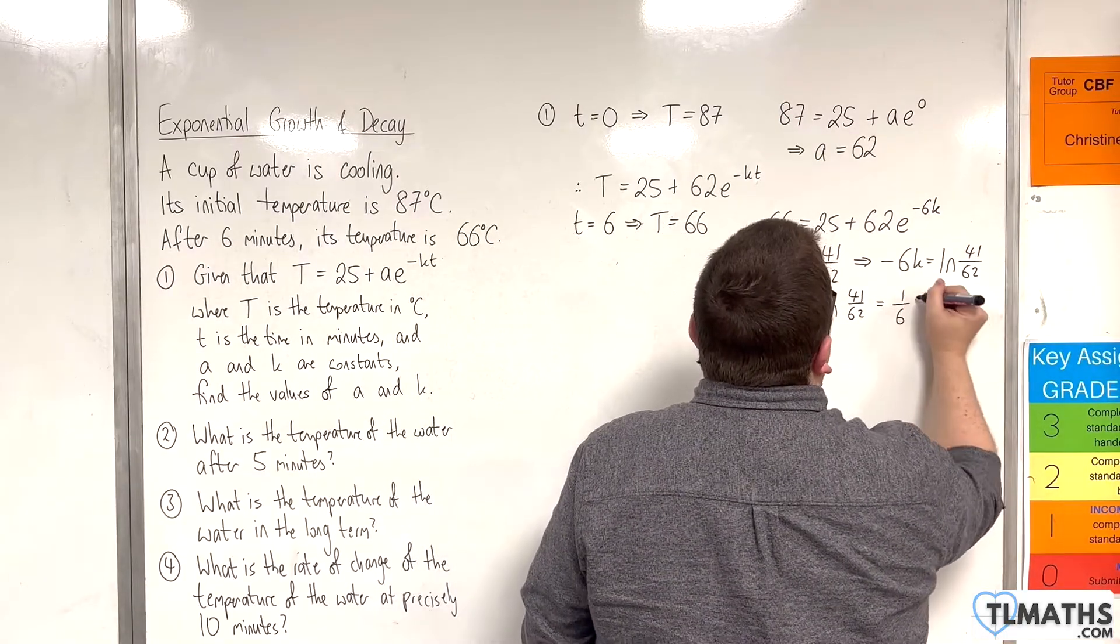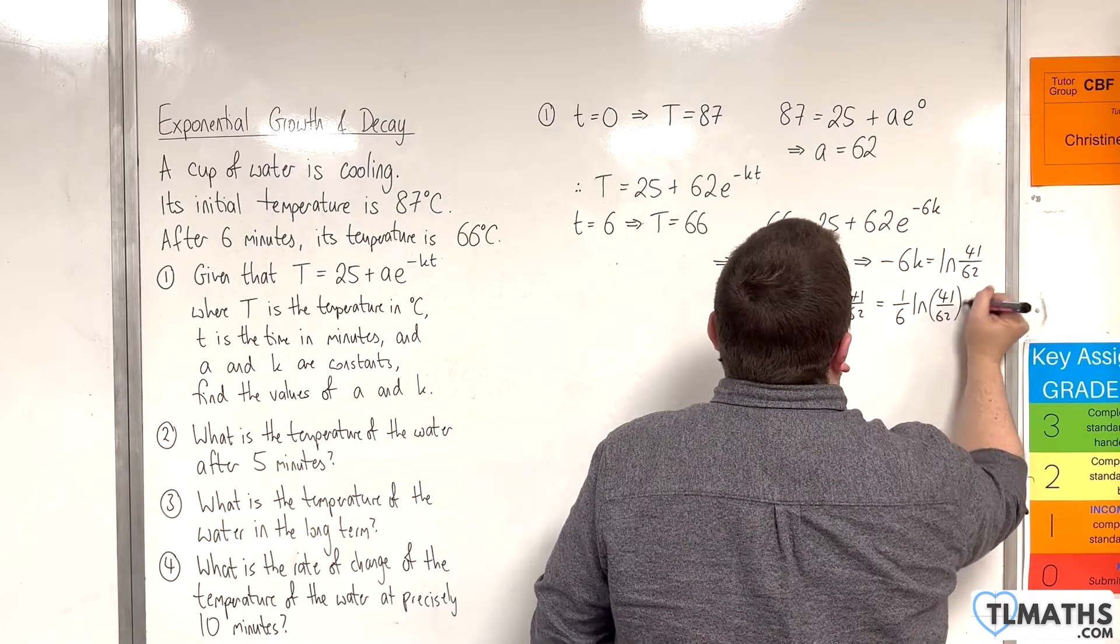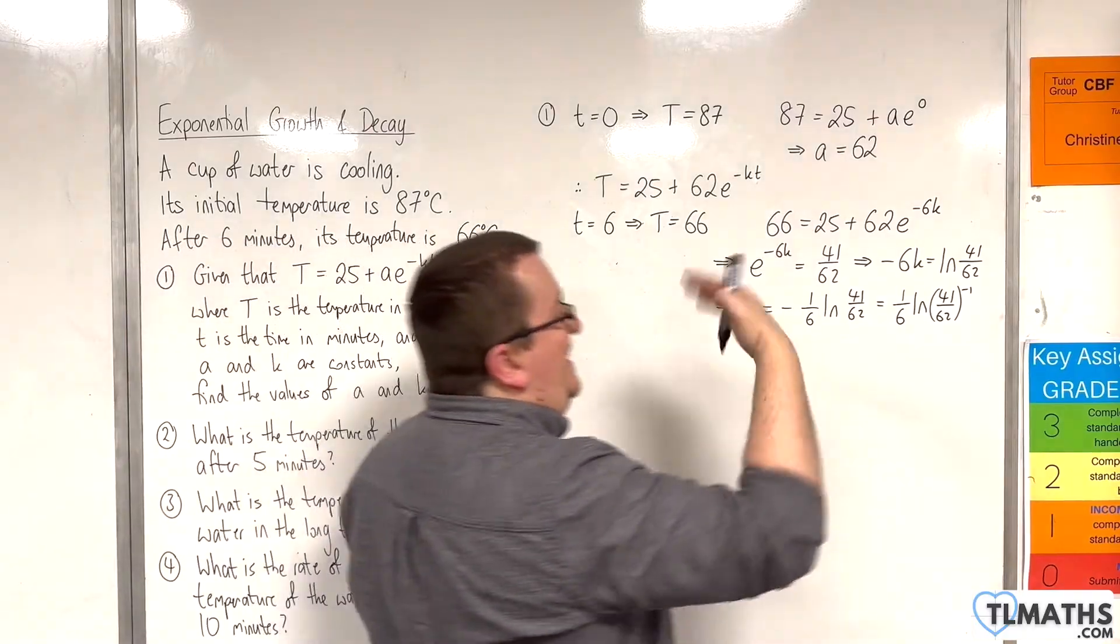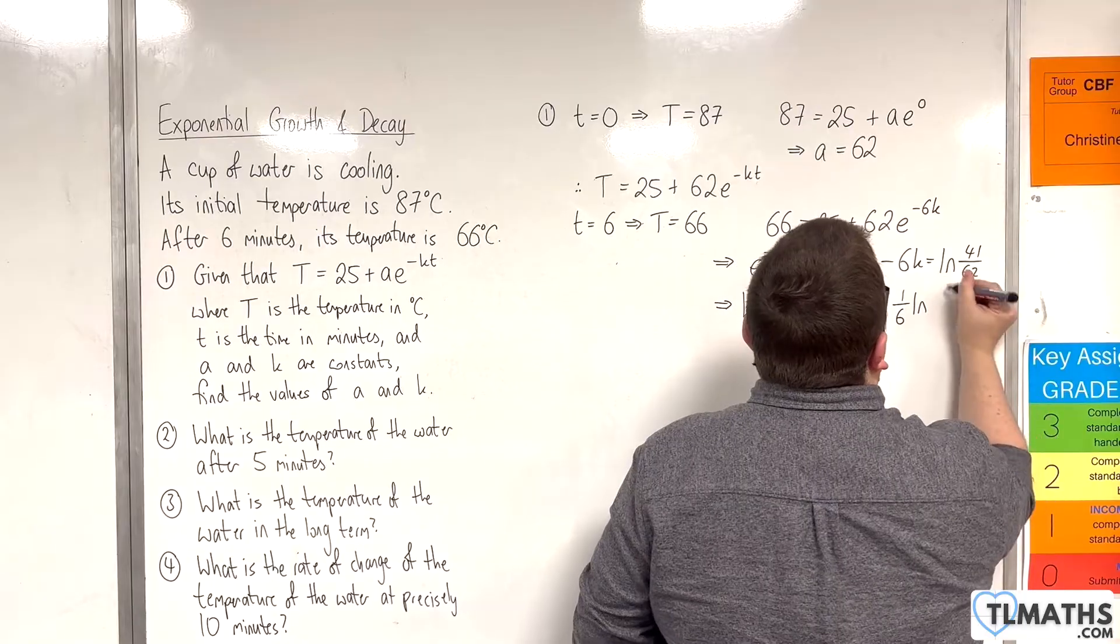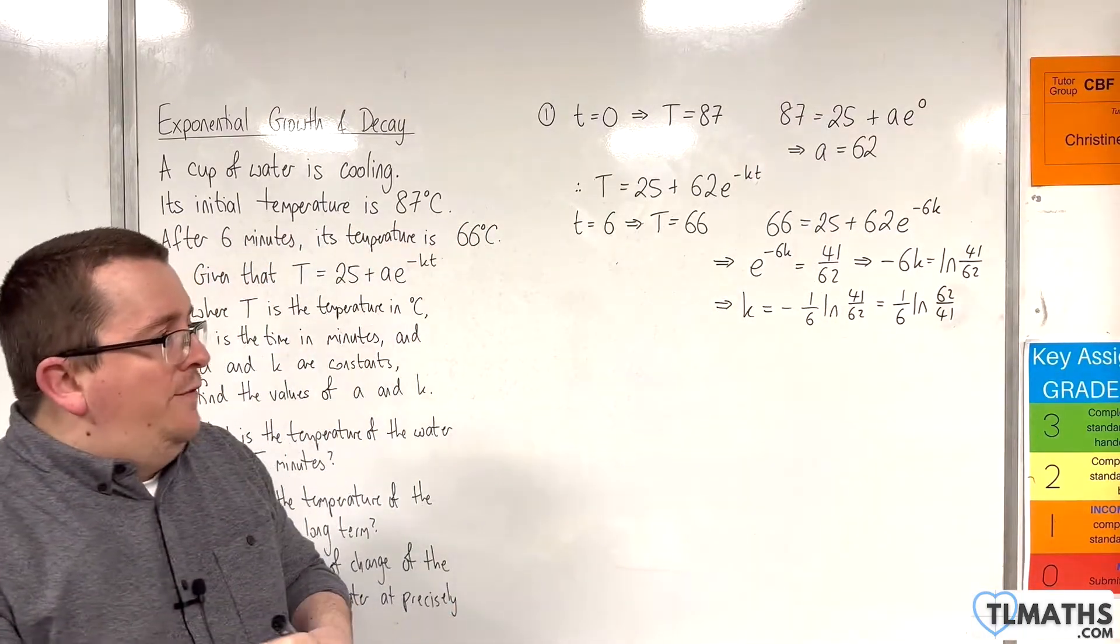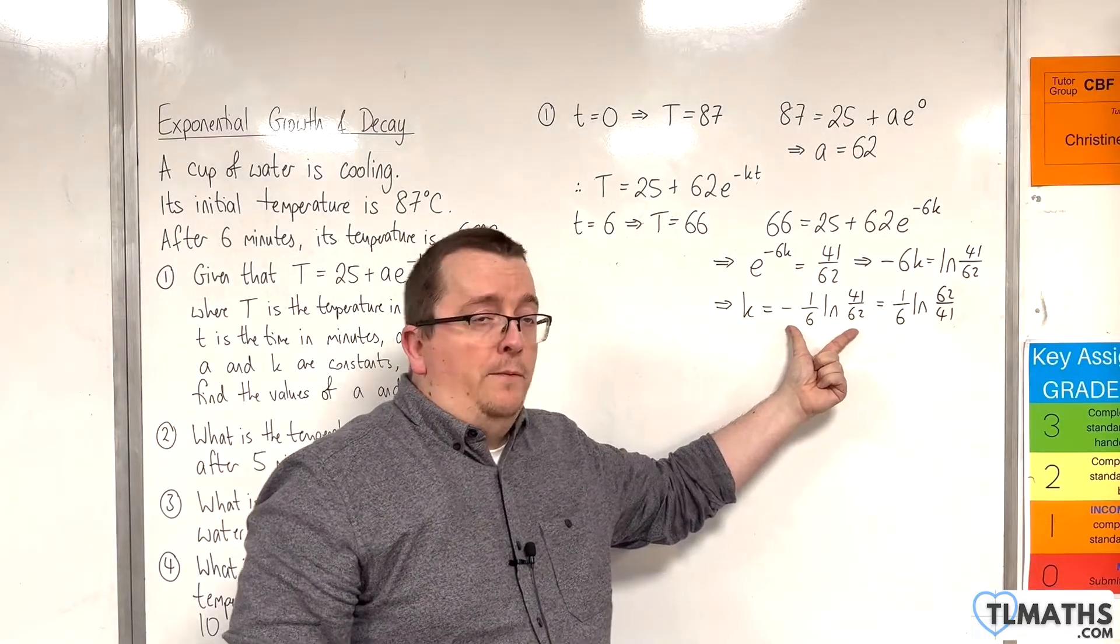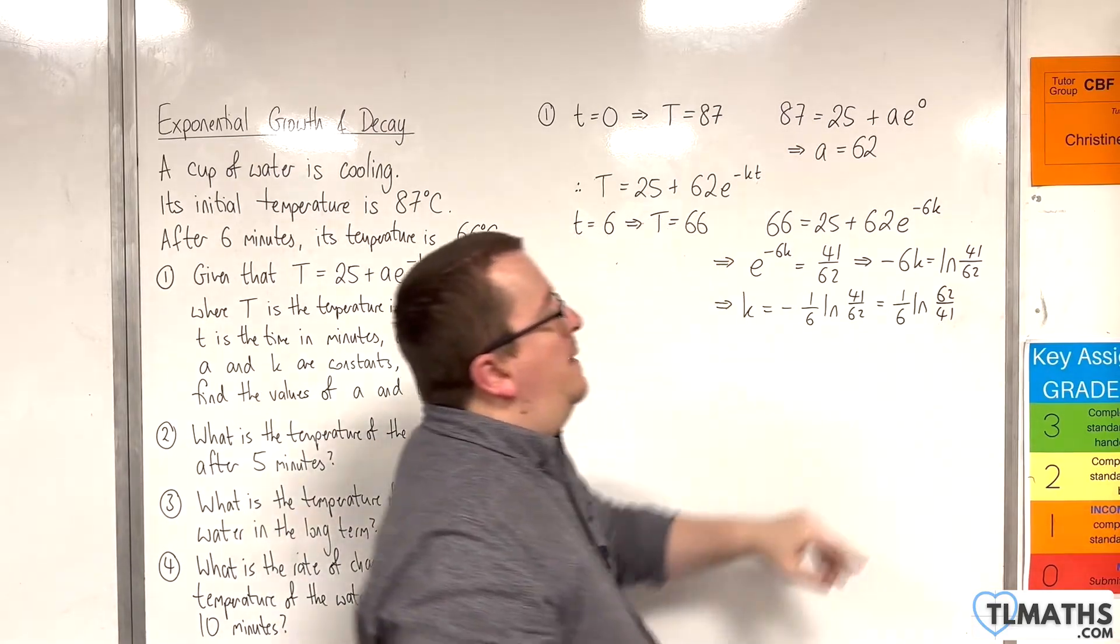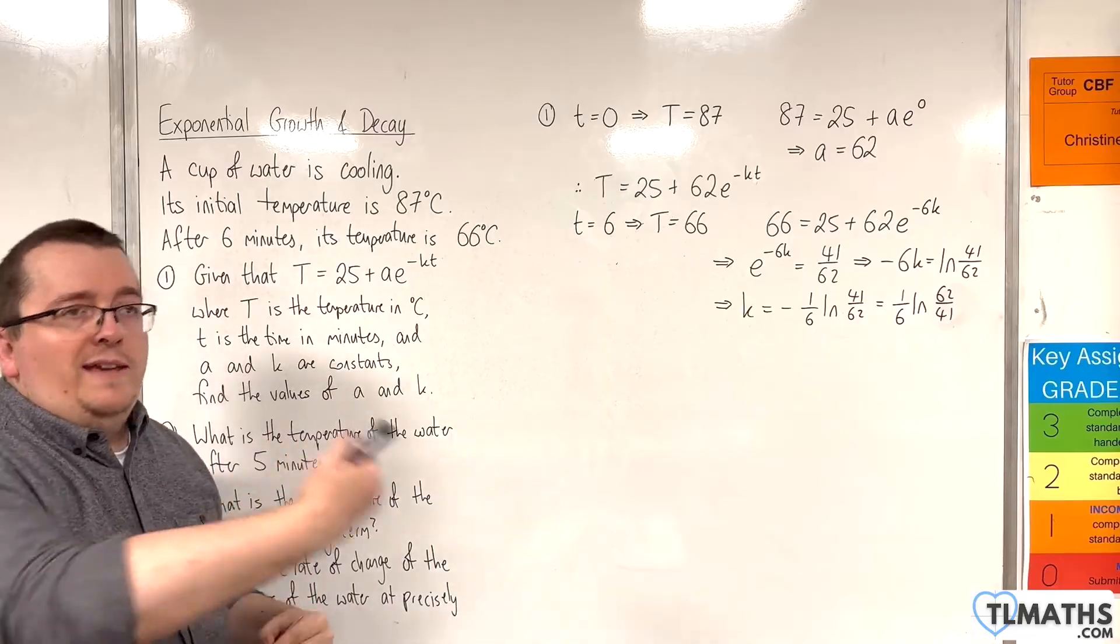And of course, 41 over 62 to the minus 1 is 62 over 41. So 62 over 41. Now if you want to leave it like that, that's perfectly fine, and use that throughout. Now, but it is really useful to see that, because sometimes the exam question will ask you to show that you can write K in this form.